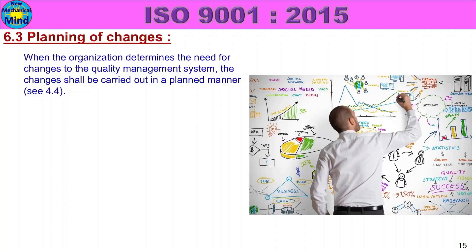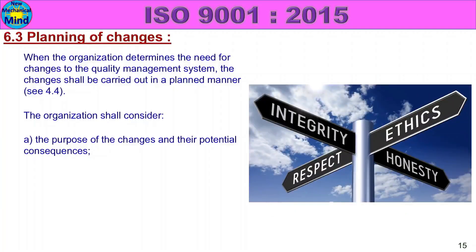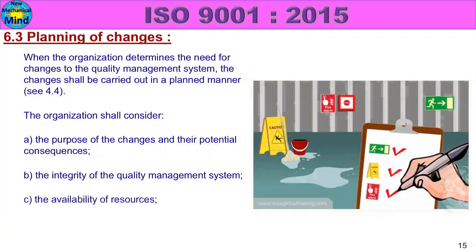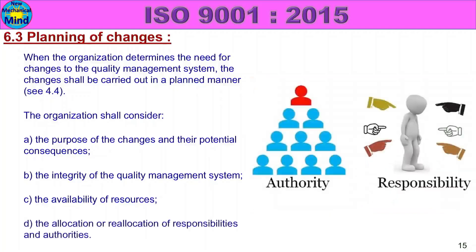As per Clause 4.4, the changes shall consider the purpose of the changes and their potential consequences. Change will implement effects, and consequences will be considered. The integrity of the quality management system — changes to the quality management system affect the system; the quality management system is improved with no negative impact. The availability of resources: changes are implemented considering resources. The allocation or re-allocation of responsibilities and authorities shall be considered.